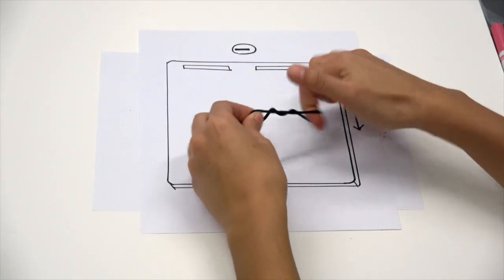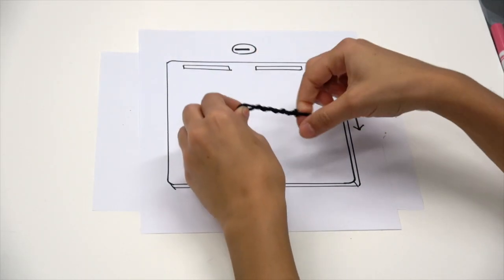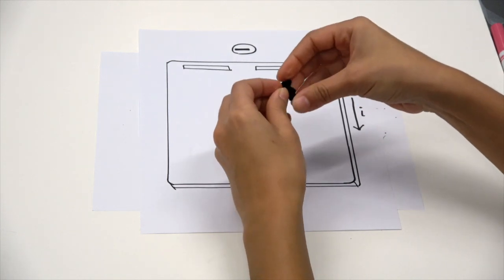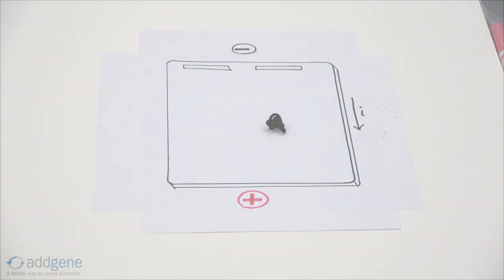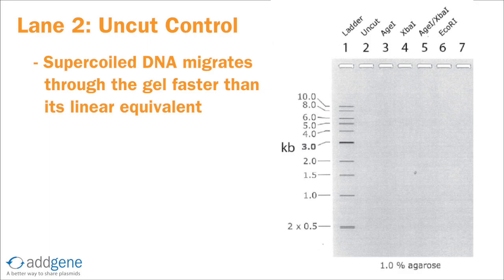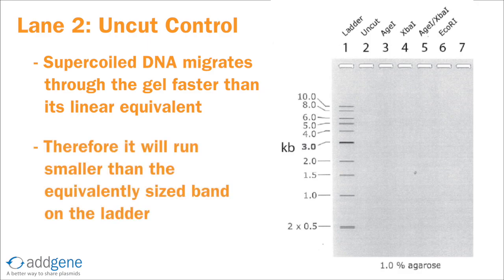The uncut plasmid typically adopts a supercoiled conformation. That's because these plasmids were isolated from bacteria, and supercoiled is the native conformation of plasmids in vivo, because it's compact. A compact conformation allows the plasmid to migrate through the gel at a faster rate than its linear equivalent. This is because it experiences the same amount of electromotive force but less resistance due to friction. As a result, it runs a little smaller than the equivalently sized band on the ladder. This plasmid is 7.5 kilobases, so let's draw the supercoiled band right below the 7.5 kilobase pair mark.